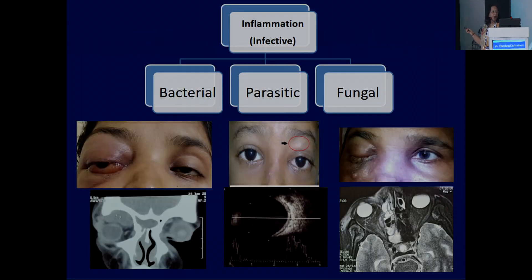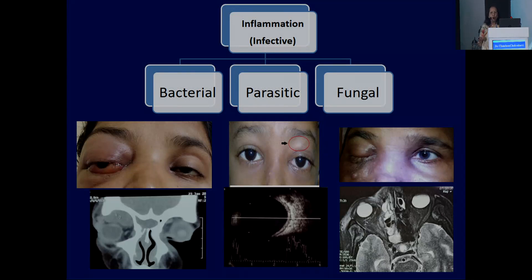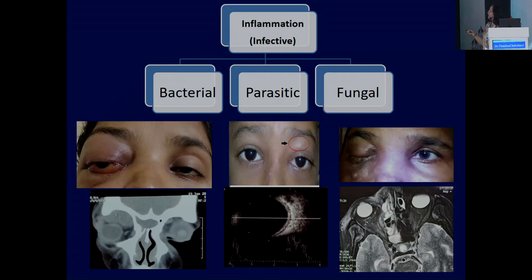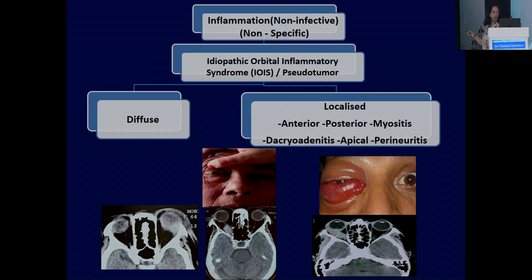A bit about inflammation. Inflammation could be an infective condition or it could be a true inflammation. In case of infective conditions, you can get orbital cellulitis — that is bacterial infection — parasitic infection such as a case of neurocysticercosis, or it could be a fungal infection like a case of aspergillosis or mucormycosis.